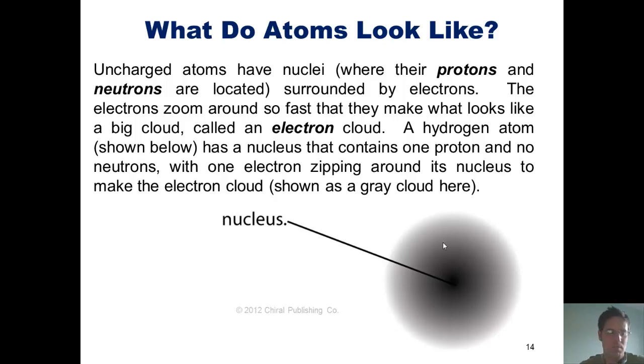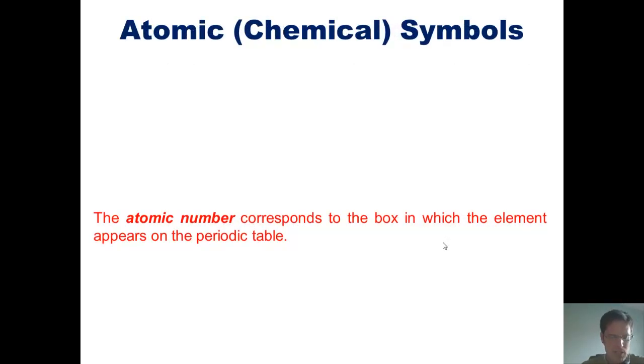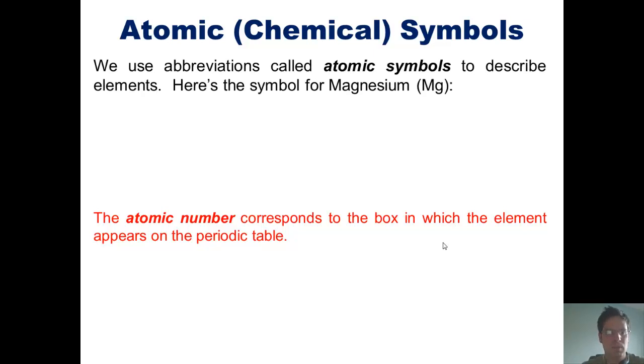I want you to keep this in mind as we turn to additional topics, which brings us to the subject of atomic, also called chemical symbols. We use abbreviations called atomic symbols to describe elements. Here's the symbol for magnesium.